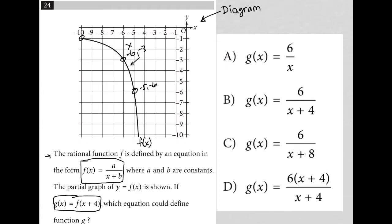So I'm going to just utilize what's been provided. So I'm going to rewrite this here. f of x is equal to a over x plus b. g of x is equal to f of x plus 4. Well, what would that mean for me?